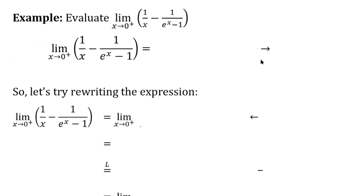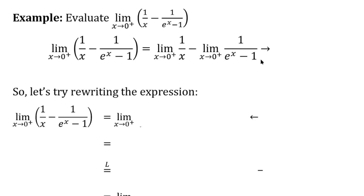So we have the limit as x approaches 0 from the right of 1/x minus 1/(eˣ - 1). The limit laws tell us that we can take the limit of a difference and change it into the difference of the limits. So we're going to change this to: limit as x→0⁺ of 1/x, minus the limit as x→0⁺ of 1/(eˣ - 1). For functions that are continuous on their domains, unless you're getting infinity, you can think of the limit from the right or left as just being the overall limit.